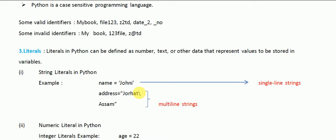Next, for the variable 'address', I have written a string and used a backslash. Using this backslash means the string is continued on the next line as well. So if you want to continue a string on the next line, you have to use this backslash — this is for a multi-line string.